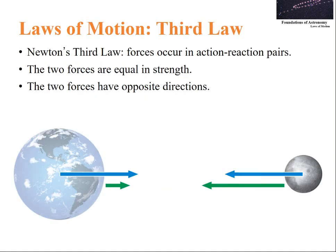Now coming to Newton's third law: Forces occur in action-reaction pairs. Two forces are equal in strength and the two forces have opposite direction. Earth and moon attract each other. If F is the force that Earth applies on moon, an equivalent but opposite force the moon acts on Earth too.